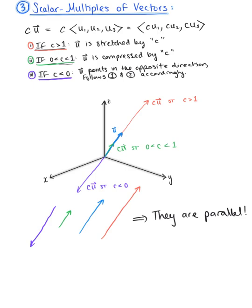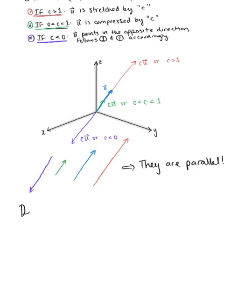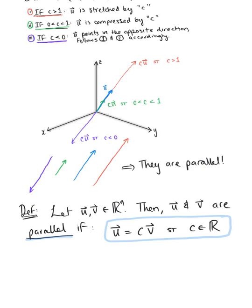This leads us to the definition of parallel vectors in R-n. Letting vector u and vector v be two distinct vectors in R-n, we say that vector u and vector v are parallel if they are scalar multiples of each other — meaning vector u equals some scalar multiple of vector v, and vice versa. Now let's take all of this knowledge and look at some examples.